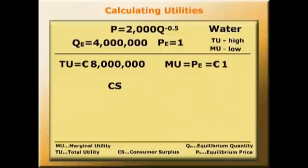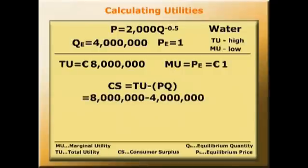If we wish to discover the consumer surplus of water, the consumer surplus is the total utility minus PQ, that is eight million minus four million, so we have a consumer surplus of four million.